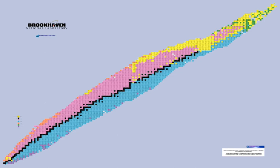Two observationally stable isobars exist for mass numbers 36, 40, 46, 50, 54, 58, 64, 70, 74, 80, 84, 86, 92, 94, 96, 98, 102, 104, 106, 108, 110, 112, 114, 120, 122, 123, 126, 132, 134, 136, 138, 142, 154, 158, 160, 162, 164, 168, 170, 176, 180, 184, 192, 196, 198, and 204.